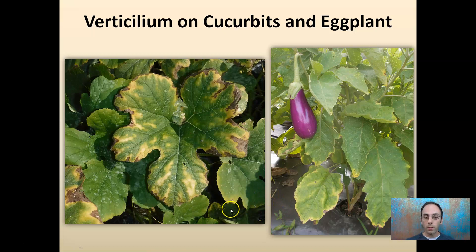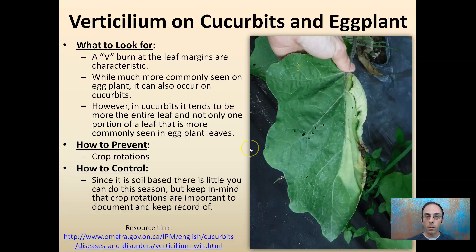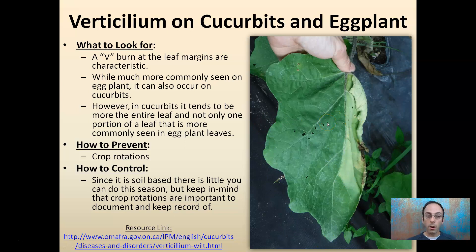Verticillium on cucurbits and eggplant — looking at the brown regions, which you might initially confuse with potassium deficiency. For verticillium, what you look for is a V-shaped burn at the leaf margins, which is characteristic. In some cases, verticillium will only affect half of the leaf, whereas potassium deficiency would be across the whole leaf. It's very common in eggplants, especially if grown in the same area year after year. Since it's soil-based, there's very little you can do in-season, so crop rotations are essential. A resource link is provided.